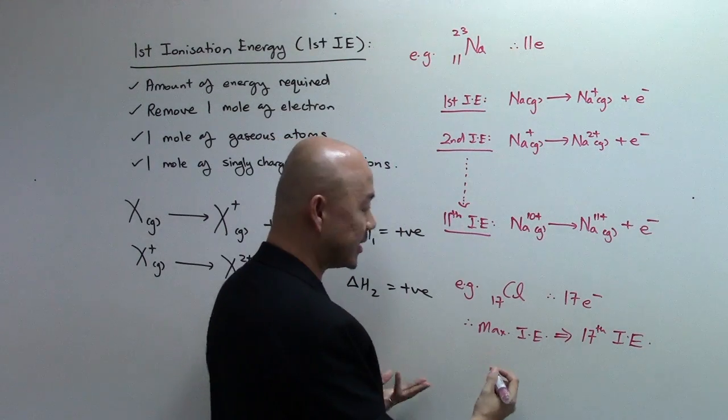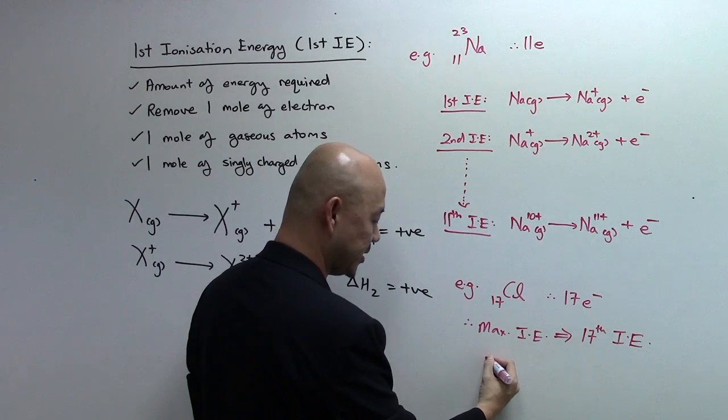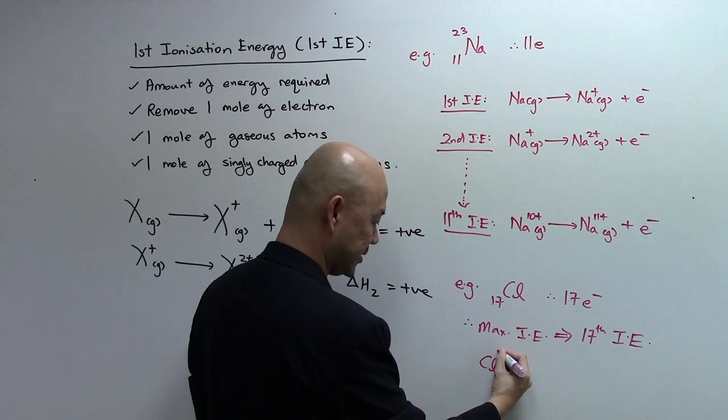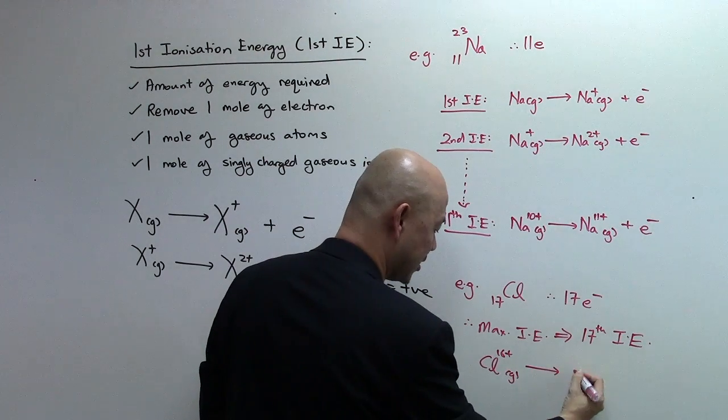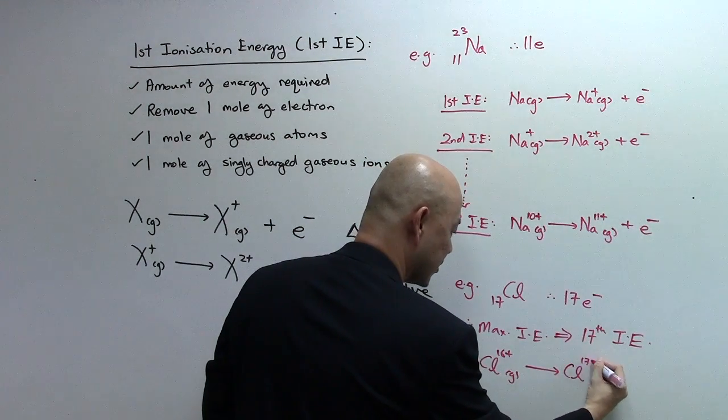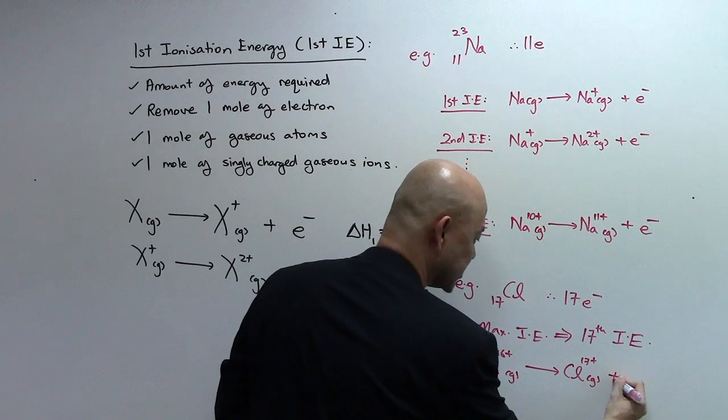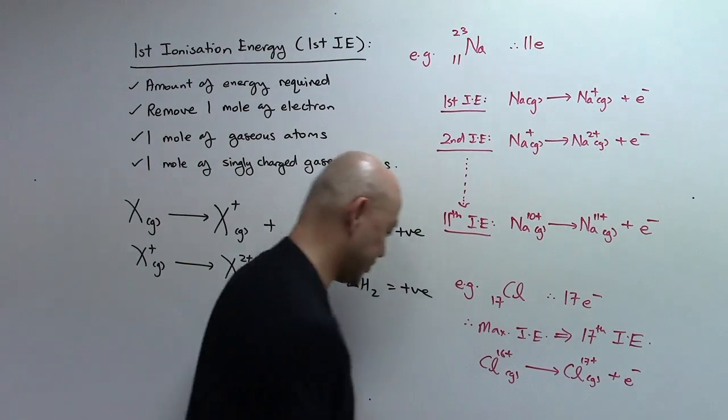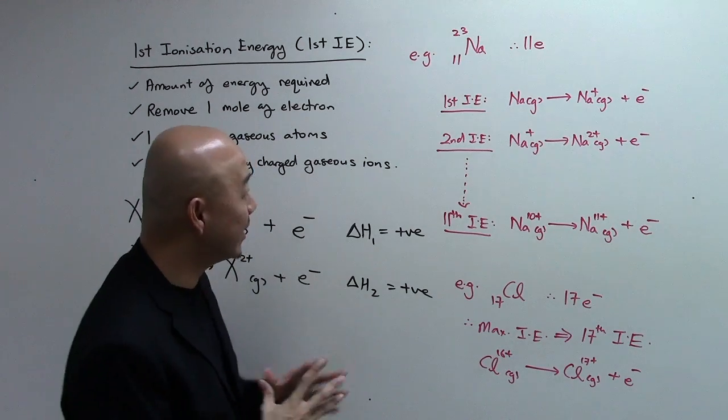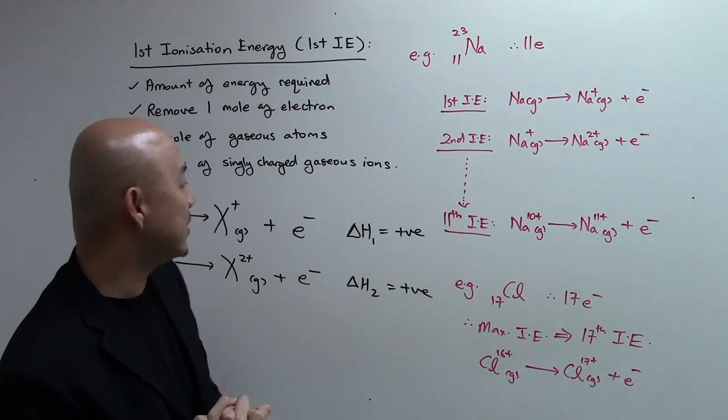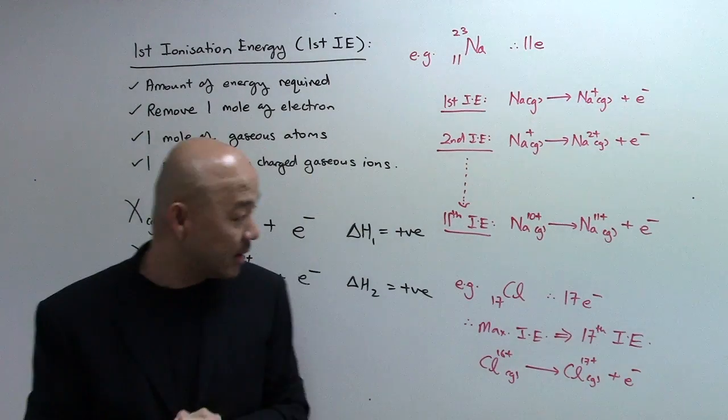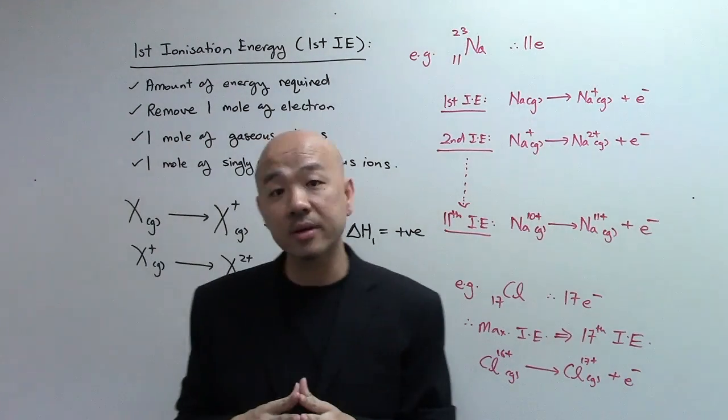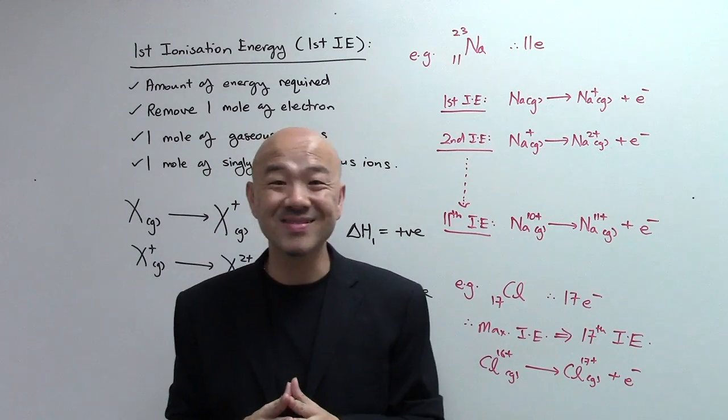So, how are we going to write the equation? It will then be Chlorine 16+ charge, the gaseous ion becomes Chlorine 17+ gaseous and electron. With that in mind, we can basically write the ionization energies of all the elements in the periodic table when asked in examinations.